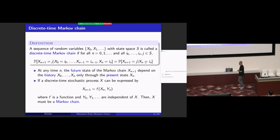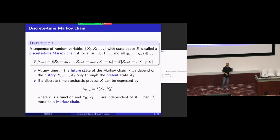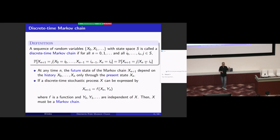For a stochastic process to be a Markov chain means that if you know the current state, then what happened in the past — time 0 up to time n minus 1 — becomes independent of what will happen in the future. Knowing your current step is sufficient to determine what will happen in the future. Why are we interested in a Markov chain? Because with this nice property, we can analyze a Markov chain step by step. You don't have to track the entire history, which makes the analysis very simple.